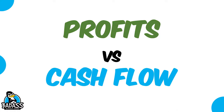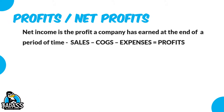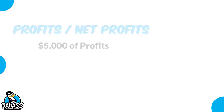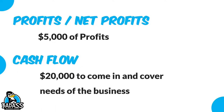You're probably wondering: cash flow and profits — are they the same or different? They're very different. When you're talking about profits or net income, it's basically the profit a company has earned at the end of a period of time. Sales minus cost of goods minus expenses equals profits — it's the income you make at the end of the day, a finite number. When you're looking at cash flow, it's following the money in and out of the business — how it comes in, where it goes, what it's spent on. For example, a business might make $5,000 in profits last month, but the company needed $20,000 to come in and cover all business needs to be cash flow positive. They're two totally different things.